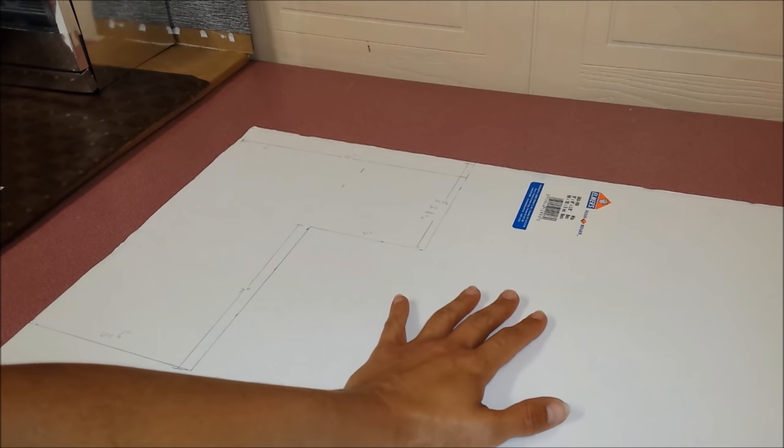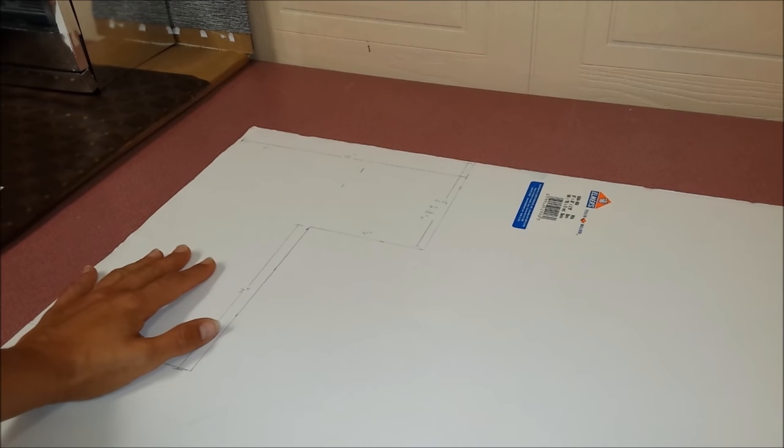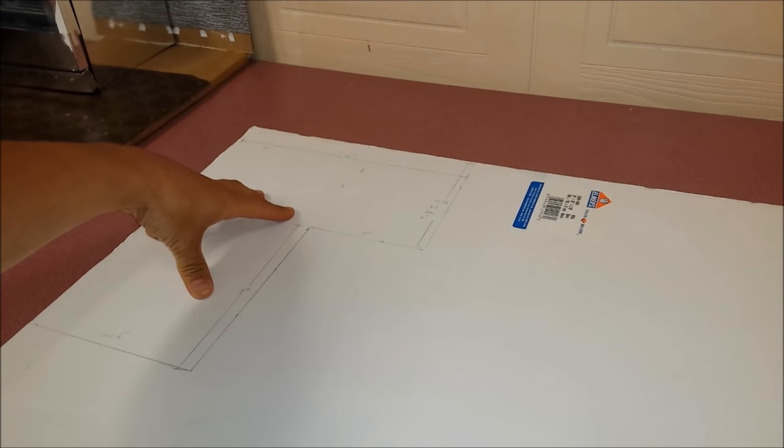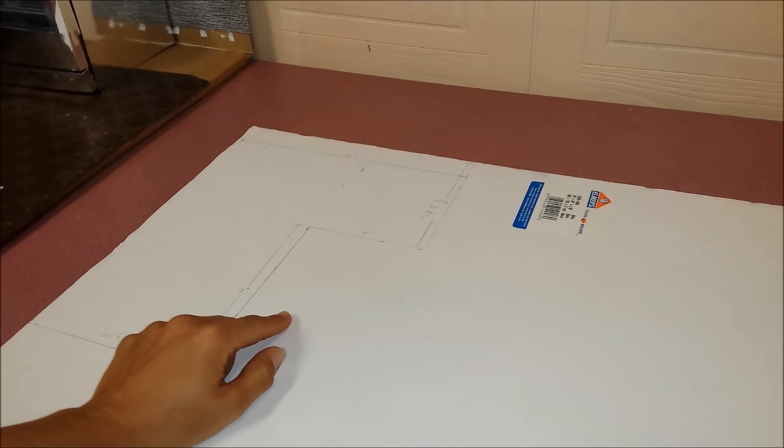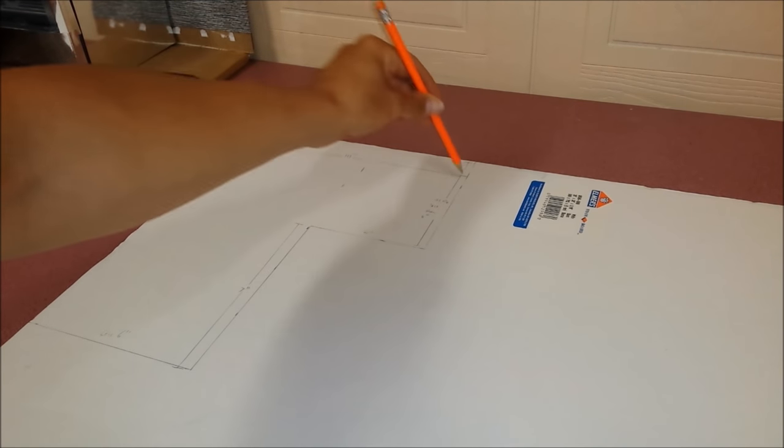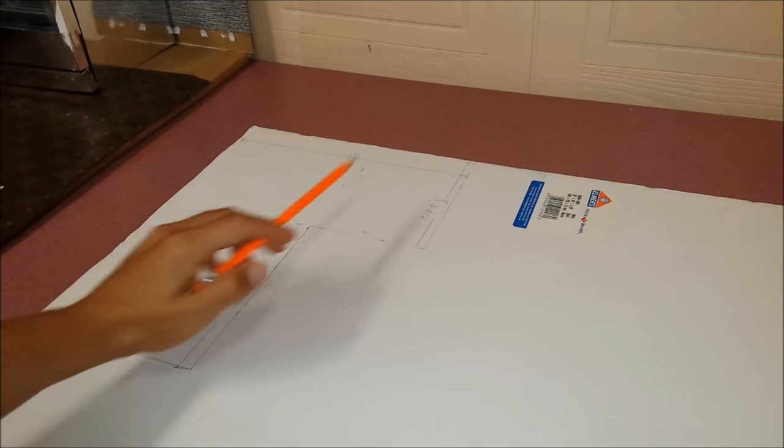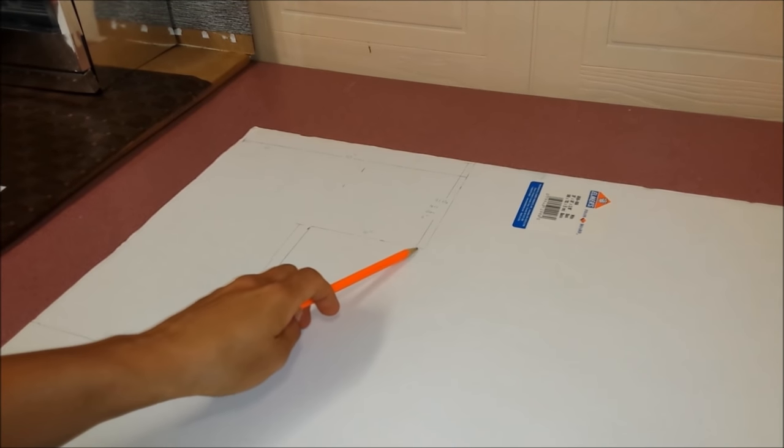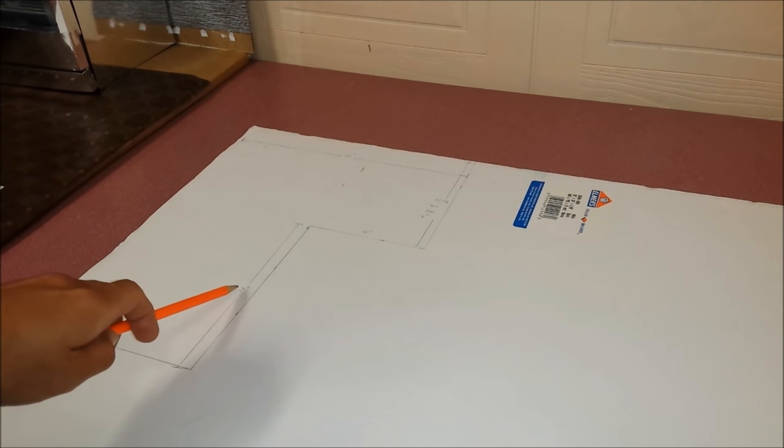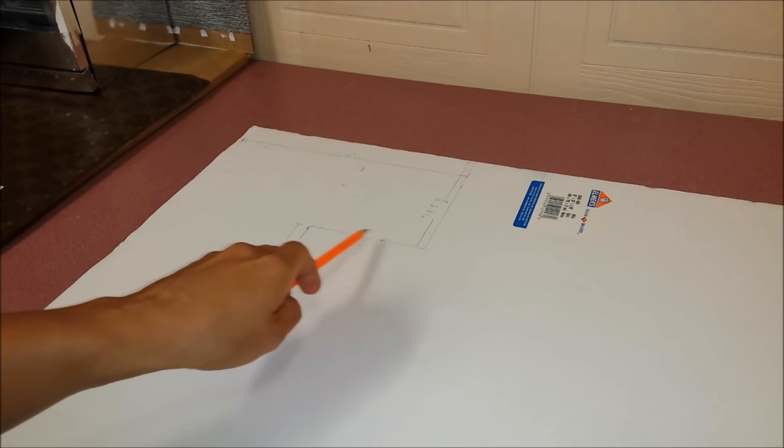This is a foam board that you can probably get from a dollar store or Walmart. I have the measurements here for the kitchen cupboards and this is the bottom. From here to here is 10 inches, then from here to here is a little less than 6 inches, same with this one. From here to here is 7 inches and from here to here is 4 inches.